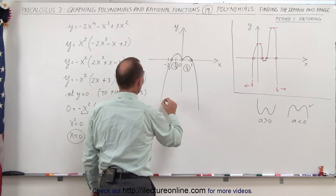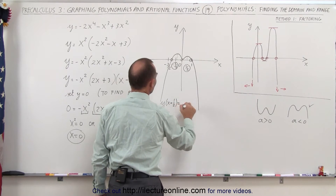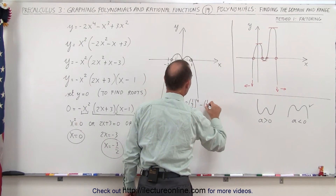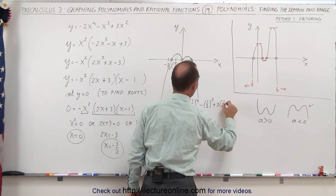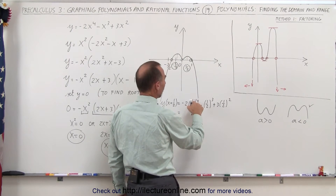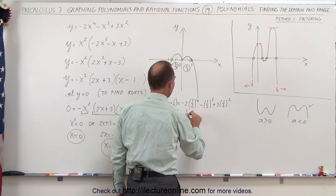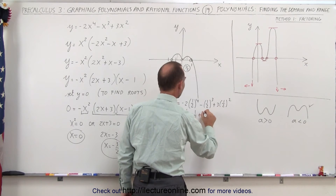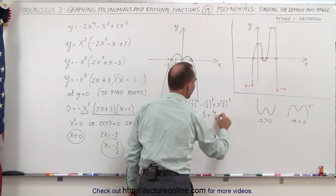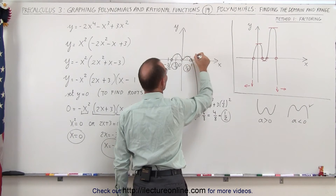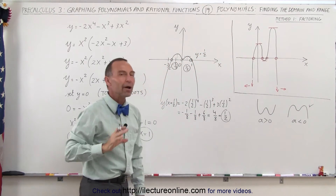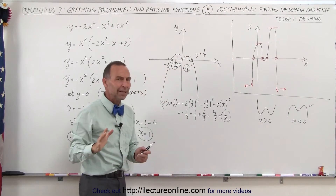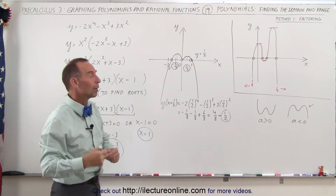Let's try x equals 1/2 first. y when x equals 1/2 equals negative 2 times (1/2) to the fourth power, minus (1/2) to the third power, plus 3 times (1/2) squared. That gives negative 2 times 1/16, which is negative 1/8; minus 1/8; plus 3 times 1/4, which is 3/4 or 6/8. Adding those: negative 1/8 minus 1/8 plus 6/8 equals 4/8, which equals 1/2. So the highest point in that region is approximately y equals 1/2.